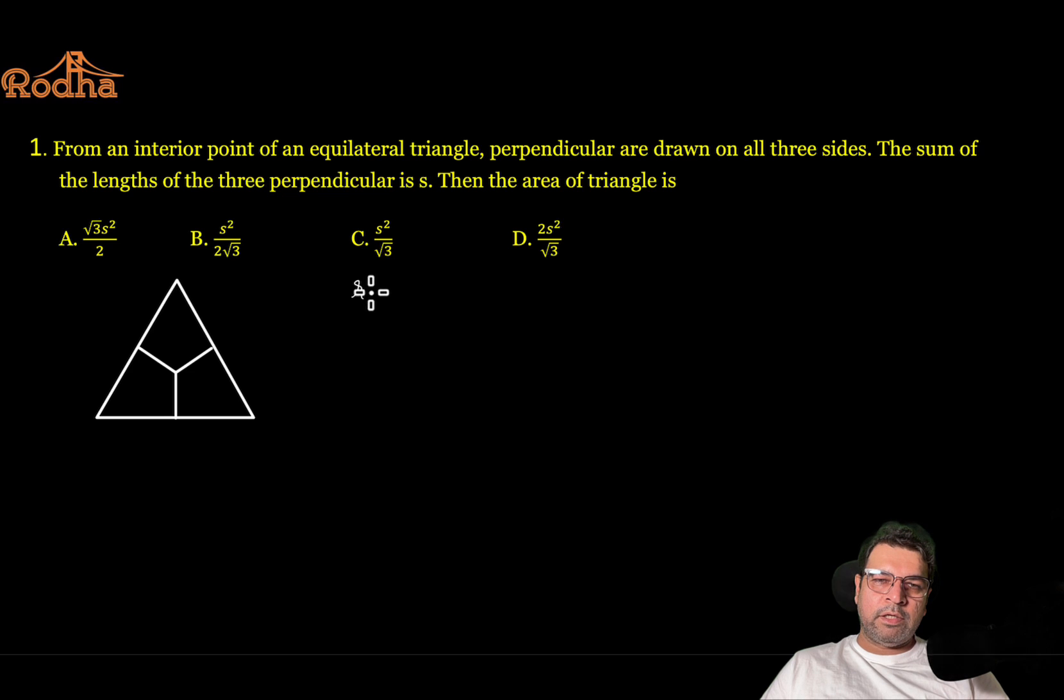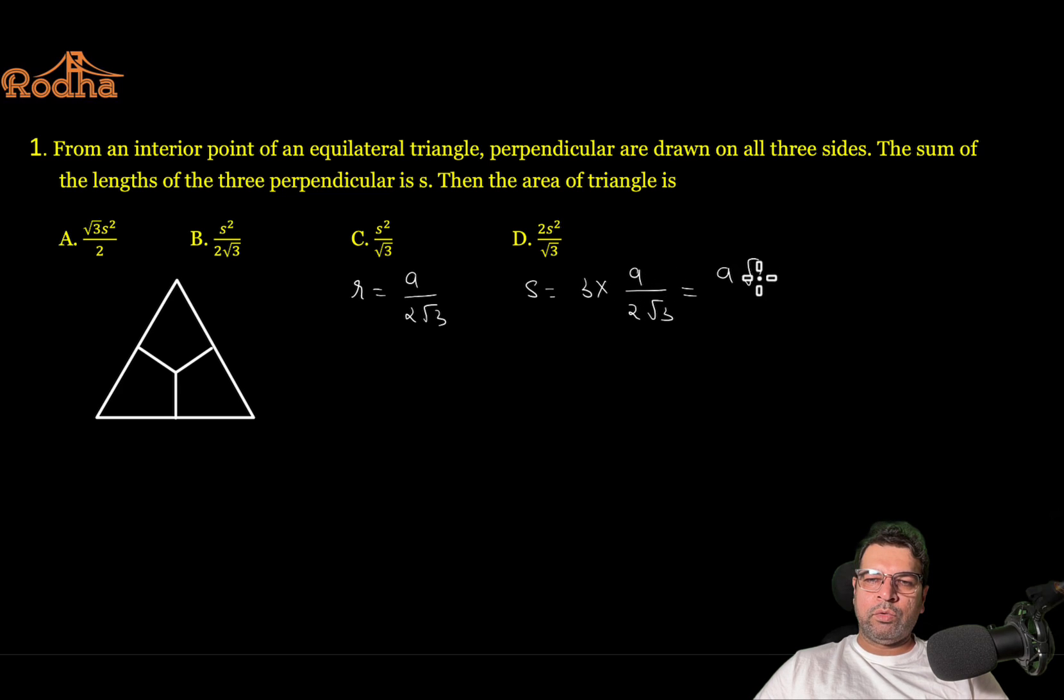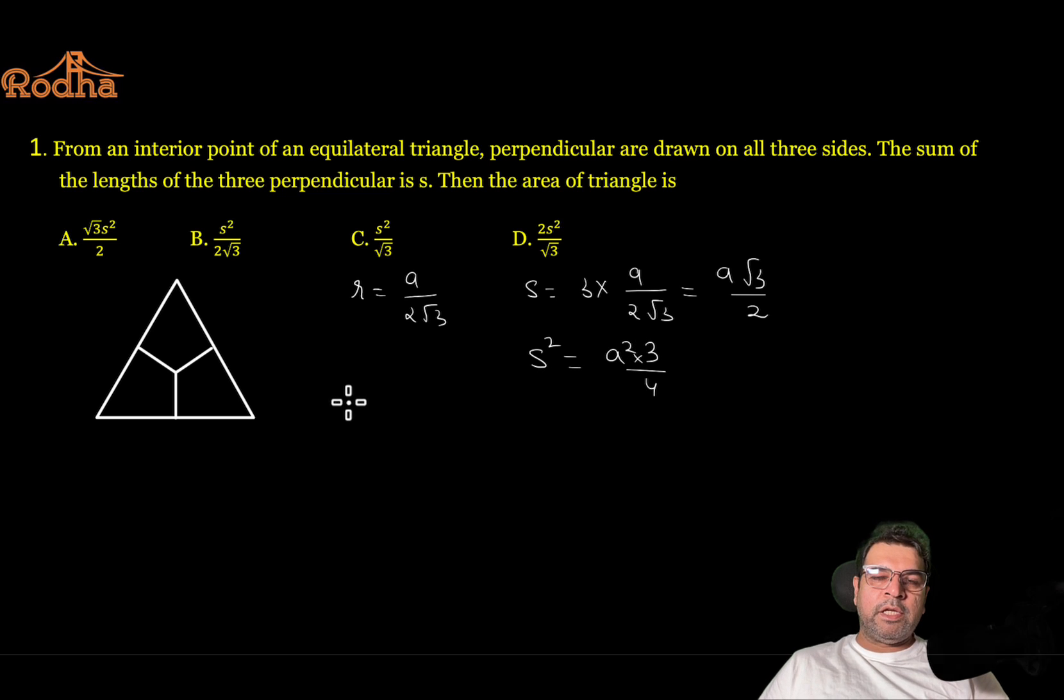In that case, we have a direct formula. If the side is a, inradius is a over 2 root 3. So in a way, S becomes the summation of these three lengths. It will be nothing but 3a. So the value of S is 3 into a by 2 root 3, or basically a root 3 by 2. S square will be a square into 3 by 4.